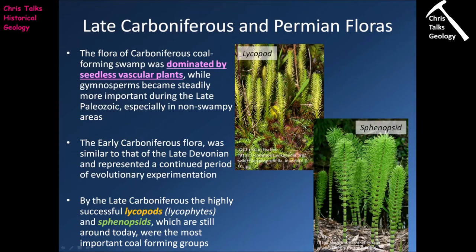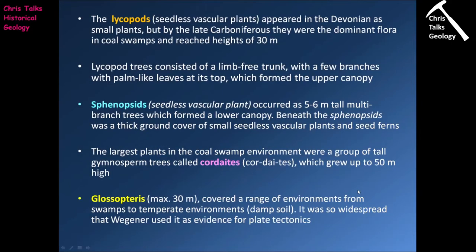By the late Carboniferous, the highly successful lycopods — also sometimes called lycophytes — and the sphenopsids, both of which are still around today, were by far and away the most important groups of plants within these coal-forming environments along the coast. The lycopods, a type of seedless vascular plant, appeared in the Devonian as small plants but by the late Carboniferous were the dominant flora in the coal-forming swamps and could reach heights of up to 30 meters.